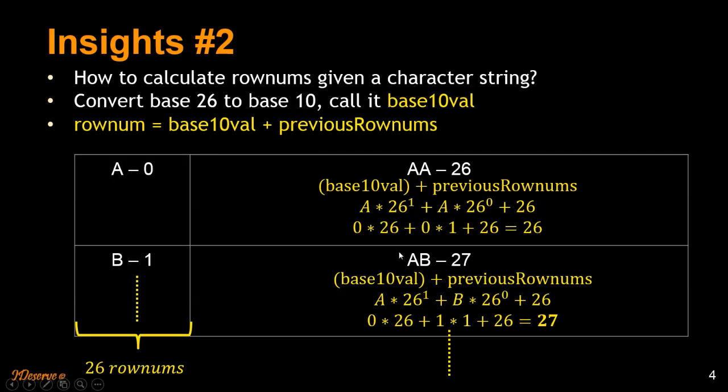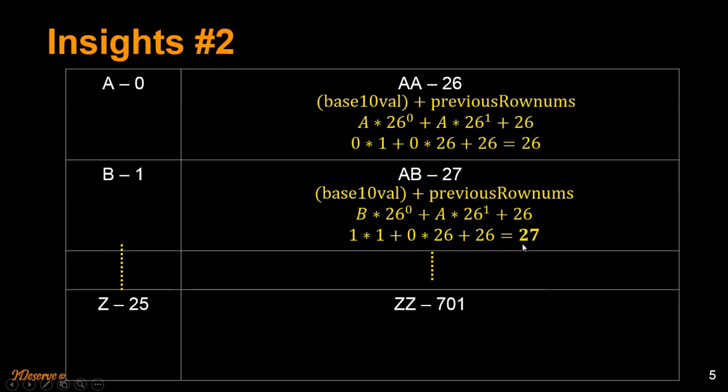It will give you 27. The row number for AB is 27. Let's try to do that for ZZ. How do we come up with 701? We'll see here right away.